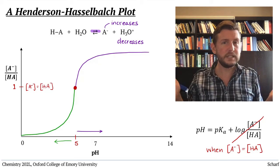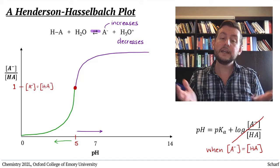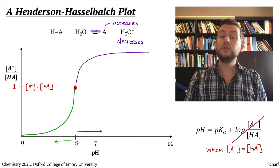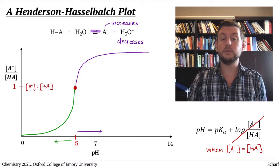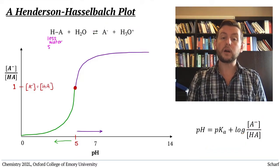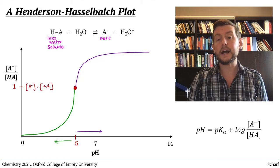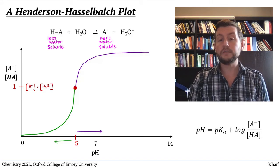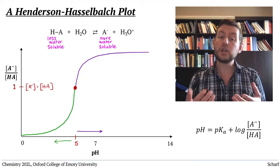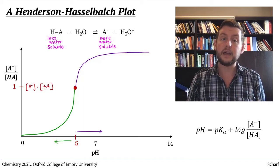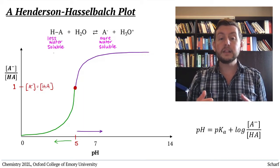So, how is this useful? In general, the water solubility of neutral organic molecules, like HA, is substantially lower than the solubility of organic ions, like A-. So, by shifting the pH of a solution, we can change the preferential solubility. At low pH, the compound is primarily in its neutral, uncharged form, HA.